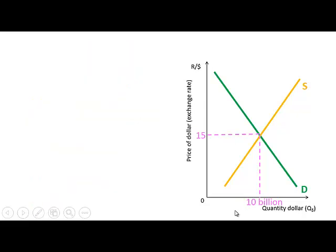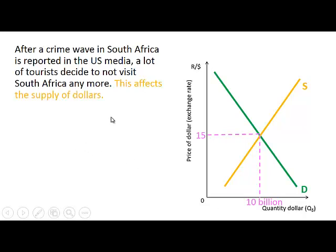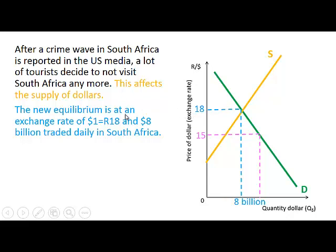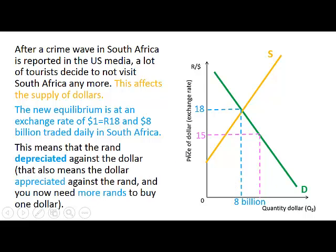Let's see how these exchange rates can change. Let's say there is a crime wave in South Africa which is reported in the US media, and a lot of tourists from America decide not to visit South Africa any longer. This will affect the supply of dollars — supply will decrease. The new equilibrium exchange rate is now 18 Rand per dollar, with 8 billion dollars traded daily in South Africa. This means the Rand depreciated against the dollar, and the dollar appreciated against the Rand — you now need more Rand to buy one dollar.